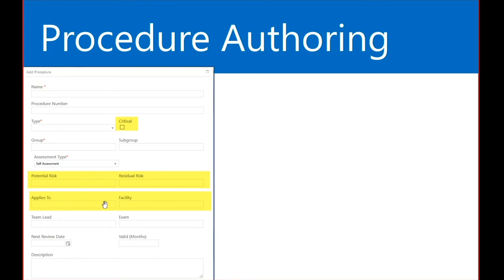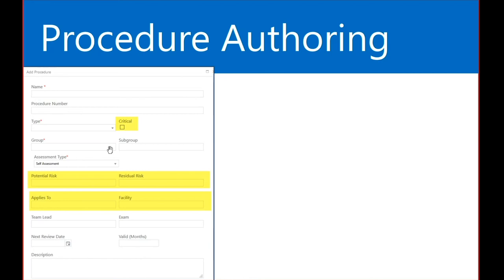Some highlighted fields include potential and residual risks, and 'Applied to,' which is the business unit. We can also define at a facility level. There are group and subgroup fields — at a group level we can have related subgroups. What's nice is that at a group level we can predefine the potential, residual, and critical values. If we have those predefined for our authors, they will default as soon as the author selects the group, though they can be updated.